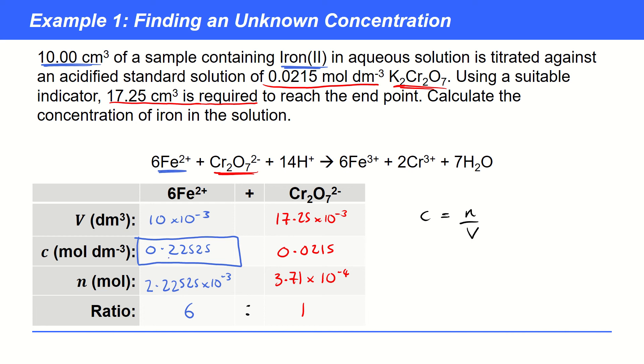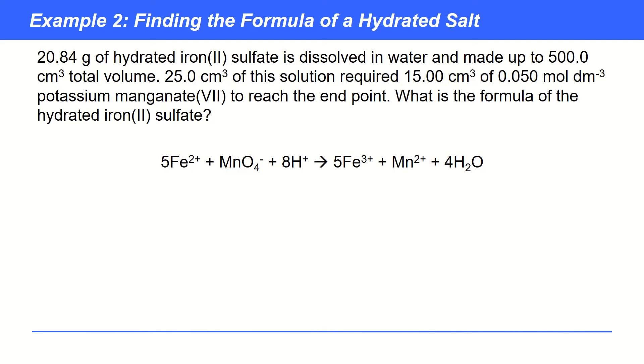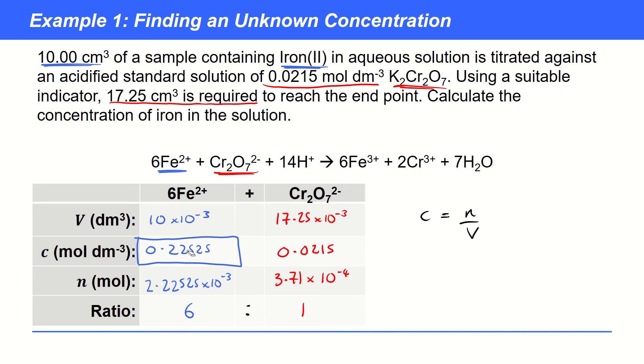And if I want to try and give that a final answer to the appropriate number of significant figures, then I'm going to go for, in this case, I've got 3 significant figures as my lowest. And so I'm just going to go for 0.2225. And so to 3 sig figs as 0.223 moles per decimetre cubed.